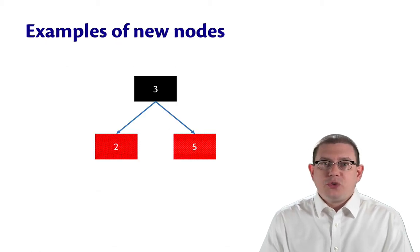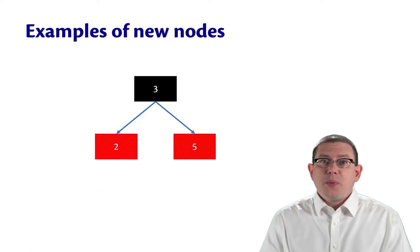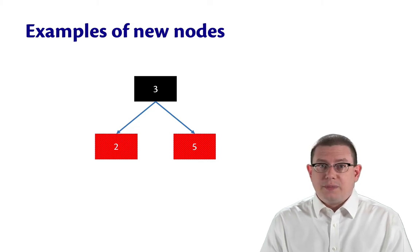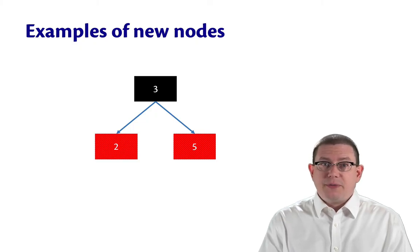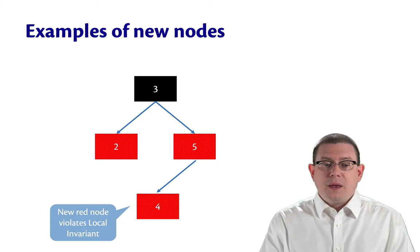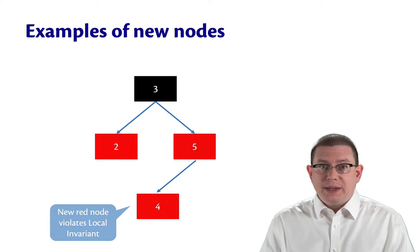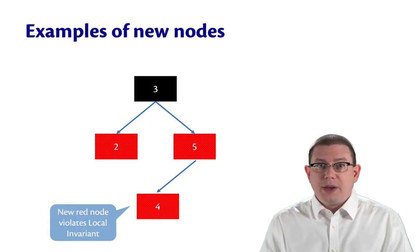Let's think about this tree as an example. Suppose we were to insert 4 into this tree. Well, by the BST invariant, there's only one place we can put it, and that's to the left of 5. But if we colored it red, that would violate the local invariant.